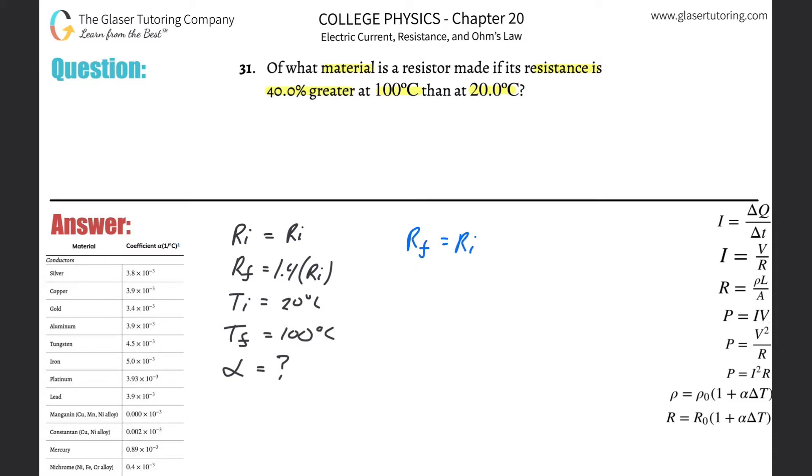Let's write the formula: Rf = Ri(1 + α∆T). Remember, the change in temperature I'm going to write as final minus initial. I'm going to plug in what I know: 1.4Ri = Ri × (1 + α(Tf - Ti)). The alpha value I don't know, but the final temperature was 100 minus the initial 20.